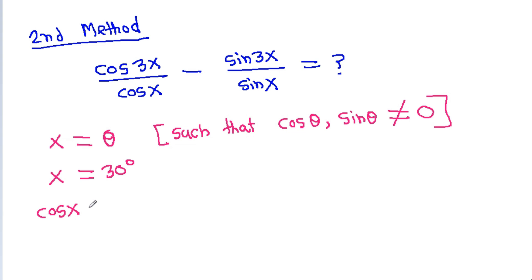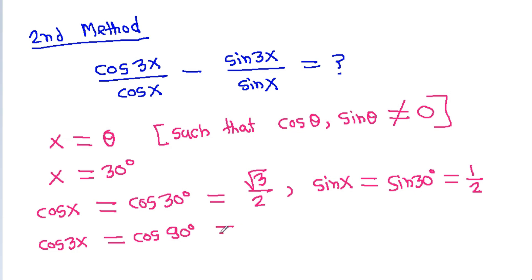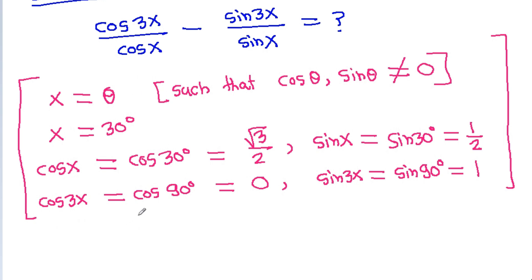Then cos x equals cos 30 degrees, which is root 3 by 2. And cos 3x equals cos 90 degrees, which is 0. And sin 3x equals sin 90 degrees, which is 1. So, cos 3x by cos x minus sin 3x by sin x equals 0 divided by (root 3 by 2) minus 1 divided by (1 by 2), which gives 0 minus 2, confirming the answer is minus 2.